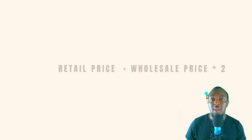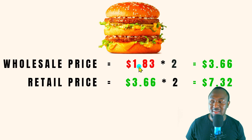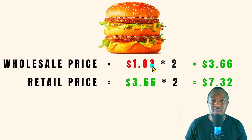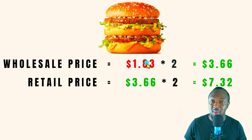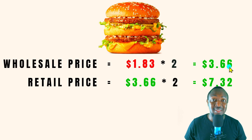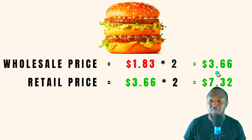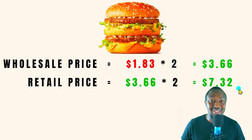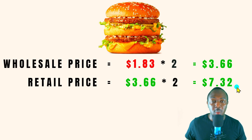Now let's look at a real example. With the Big Mac burger, it costs us $1.83. If I want to determine the wholesale price, it's simply $1.83 times two, so I have to sell the Big Mac burger at $3.66 as wholesale. And if I want to sell at retail price, it's $3.66 times two, which is $7.32 per burger.